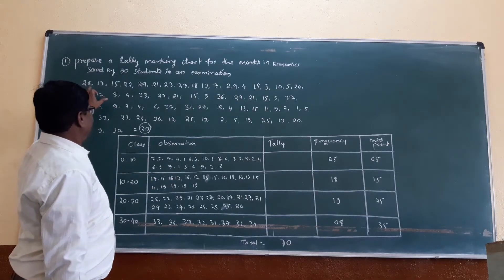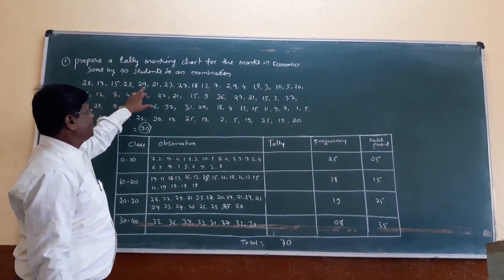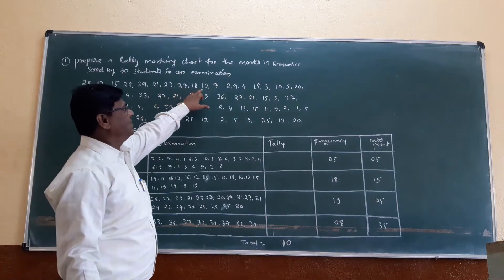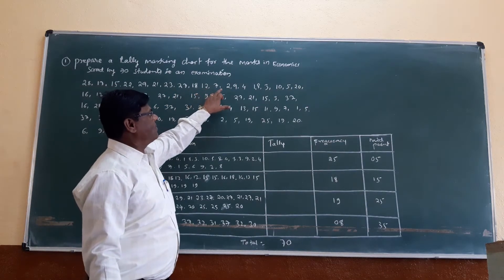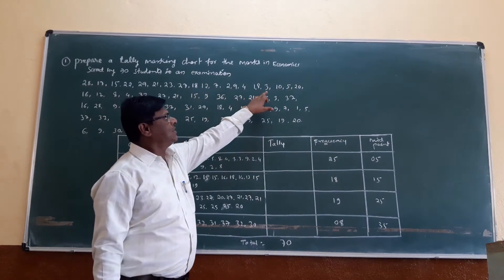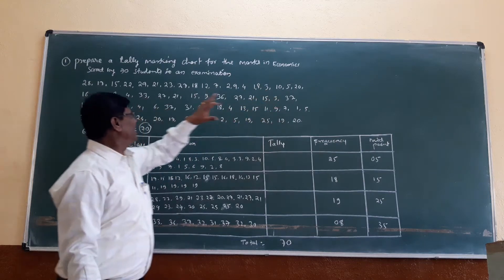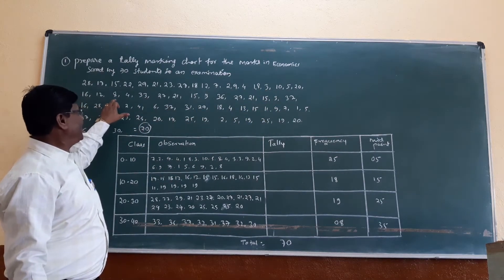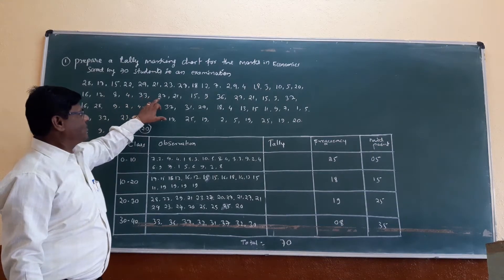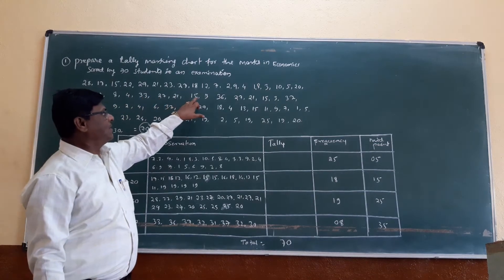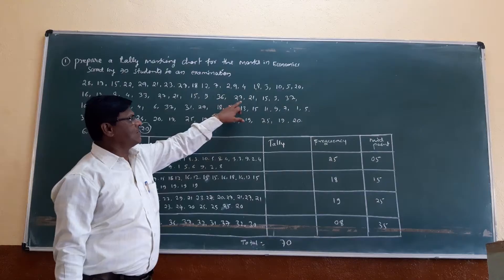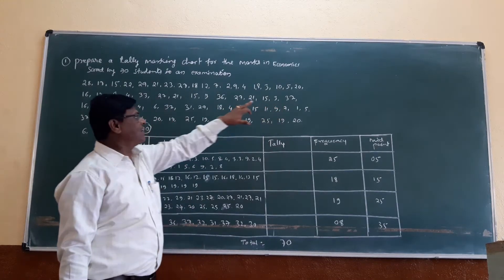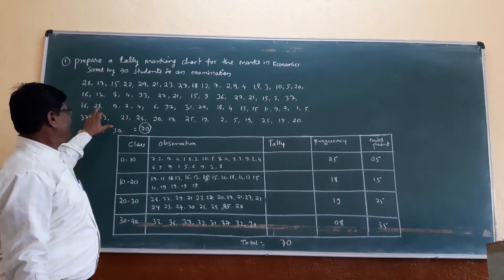The numbers are: 28, 17, 15, 22, 29, 21, 25, 27, 18, 12, 7, 2, 9, 4, 18, 3, 10, 5, 20, 6, 12, 8, 4, 33, 27, 21, 15, 3, 26, 27, 21, 15, 3, 27, 27, 21, 15, 3, 27.